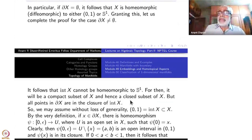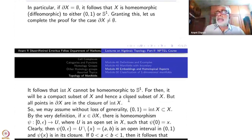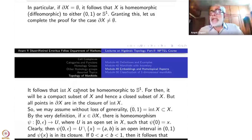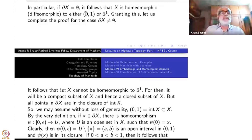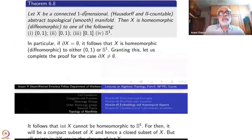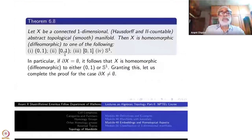If S¹ is contained inside the manifold, it will be closed as well as open — so S¹ itself disconnects things. The other case, (0,1), can be the interior of some manifold with boundary. Looking at the list: the closed interval [0,1] has interior (0,1) with 0 and 1 as boundary points. The half-closed interval [0,1) also has (0,1) as its interior with 0 as the single boundary point.